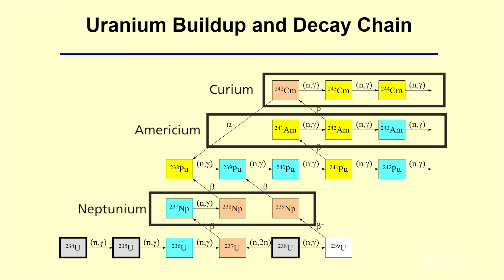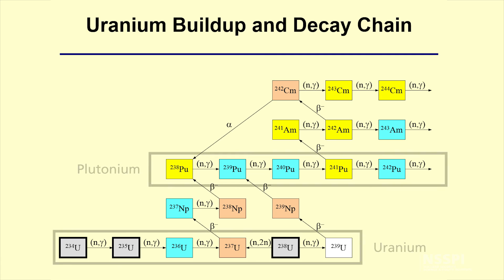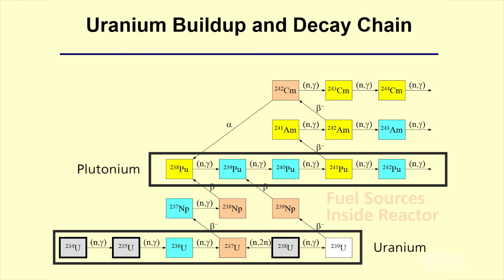The elements neptunium, americium, curium, and so forth, are elements that we refer to as minor actinides. They're small players inside of the reactor in that they are small absorbers. The principal elements of interest to us are uranium and plutonium, both of which can serve as fuel sources inside the reactor.